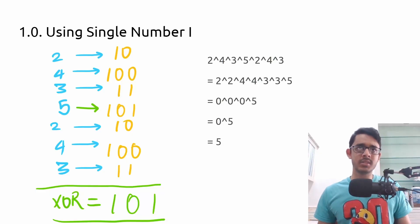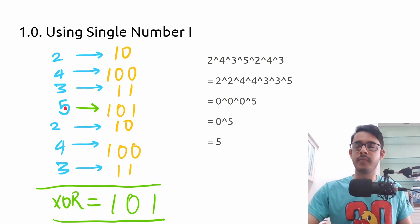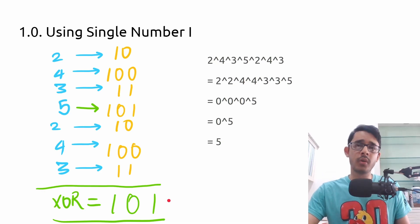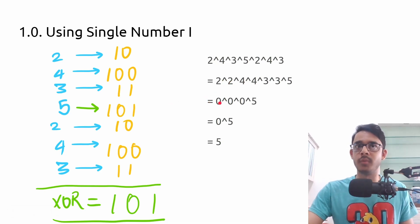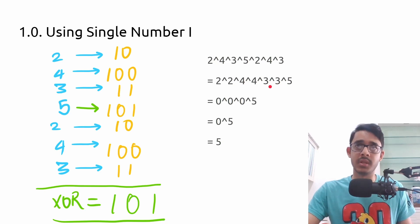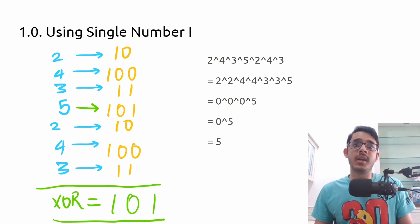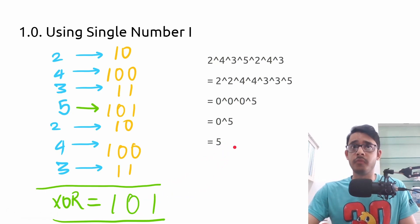Let's look at Single Number I and see what we can extract from it. For the case two four three five two four three, the XOR of all elements gives one zero one. XORing all of them was a good idea because all numbers with duplicates — like two, four, and three — cancel each other out: XOR of two and two gives zero, four and four gives zero, three and three gives zero. All duplicate elements cancel out, and only the unique element remains — so one zero one, which is five, was the final answer.